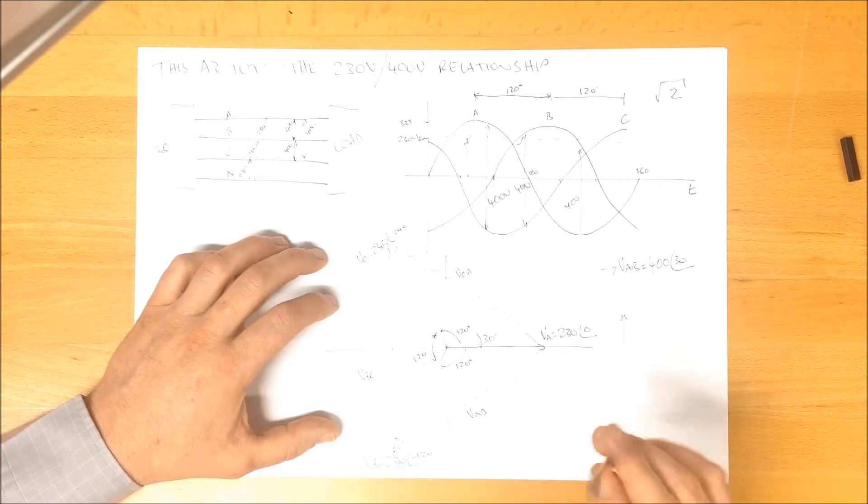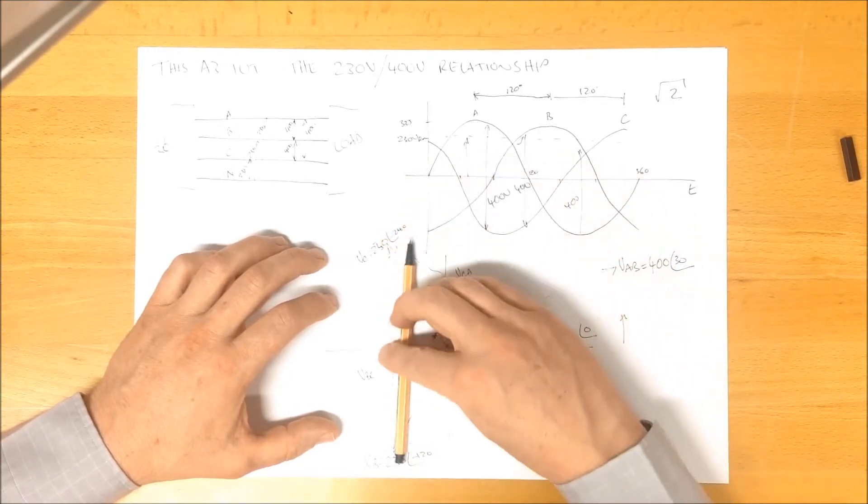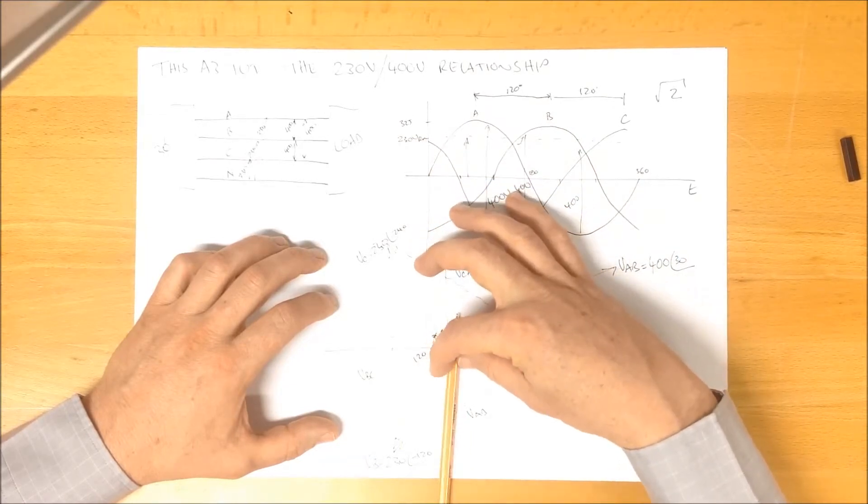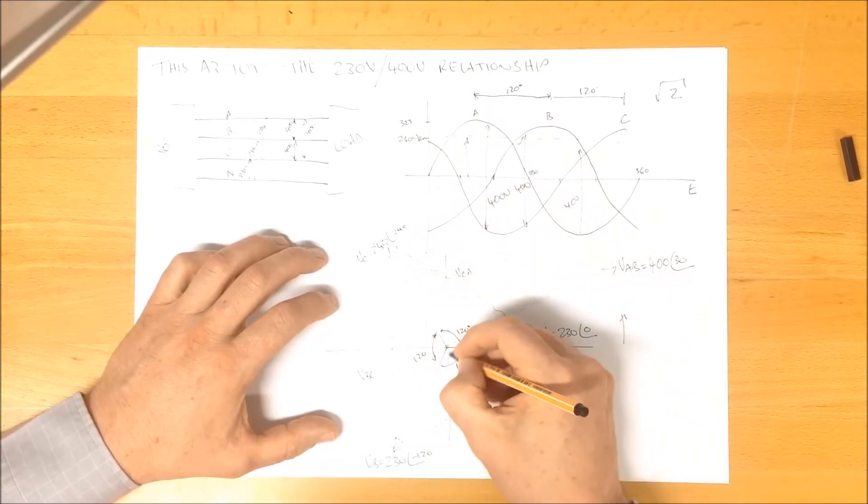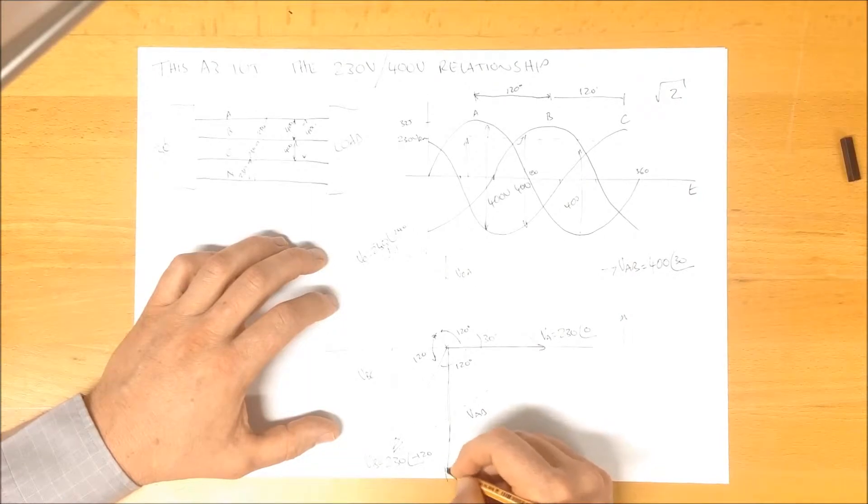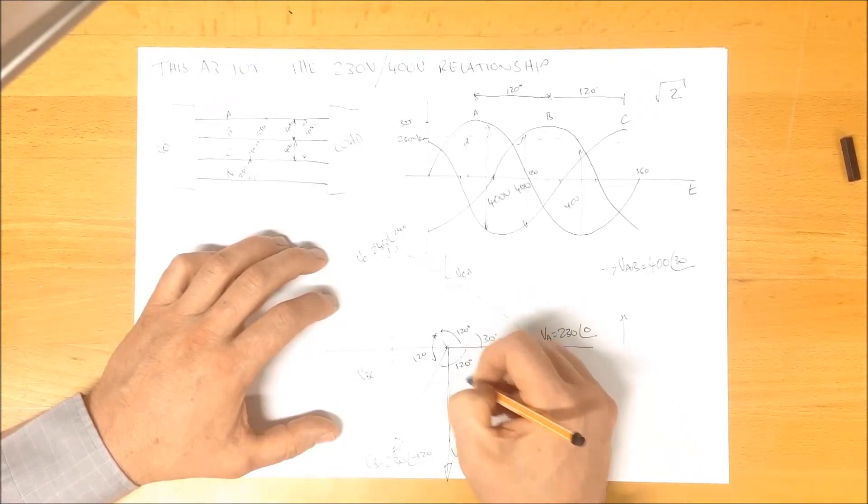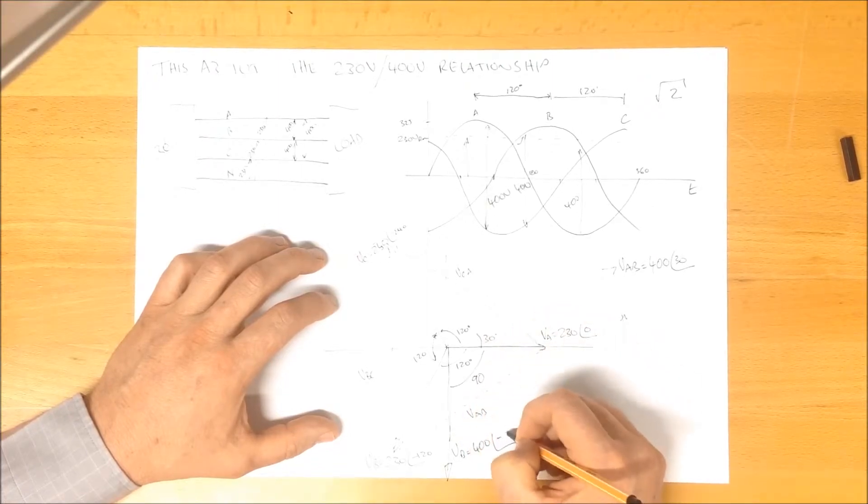Similarly, if we look at VBC, over here, which is almost the length of my pencil, we can see that that there, which goes off the bottom of the paper, is way down here. VBC is 400, and that is an angle of 90 degrees lagging.